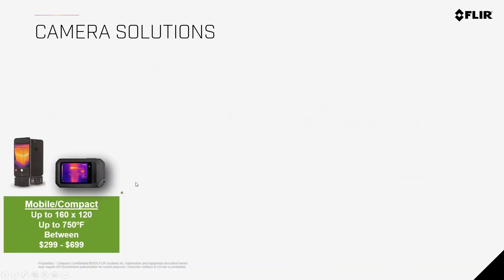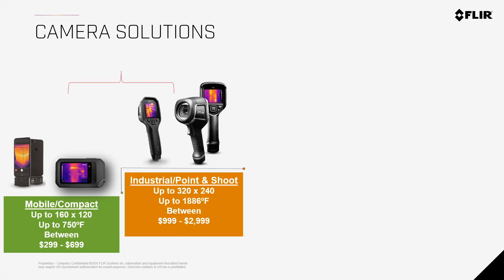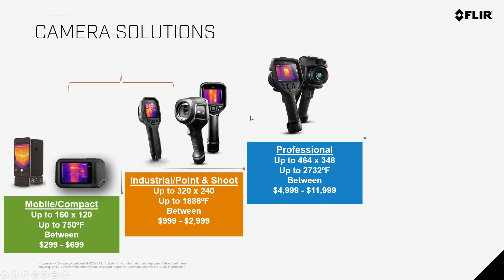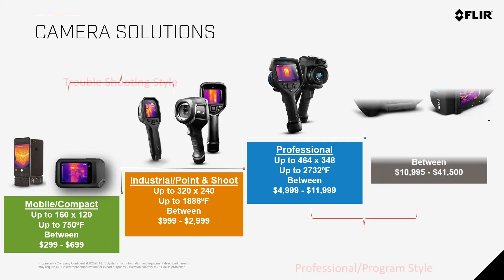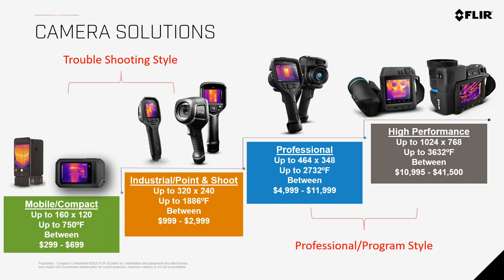Looking at the camera lineup — mobile and compact cameras, then industrial point-and-shoot from $1,000 to $3,000, then our professional cameras with more features, more powerful performance, and interchangeable lenses for shooting far away or up close. Then high-performance cameras ranging from about $11,000 to $40,000, with up to 1024 by 768 IR resolution. For utility or research and development applications, or if cameras are used day in and day out as part of your business, the investment at the higher end is justified.